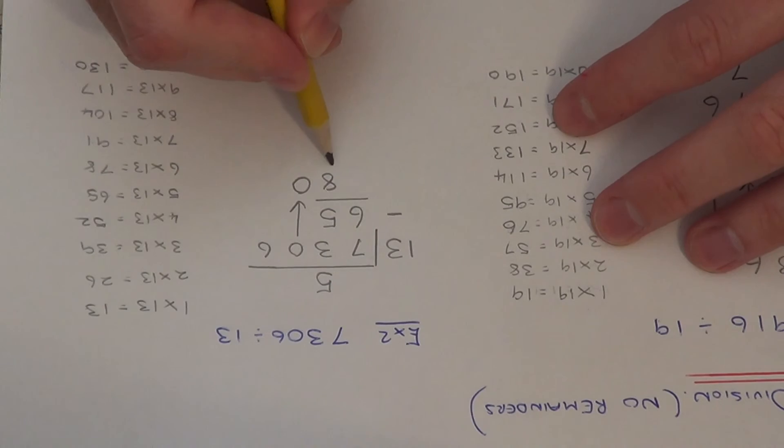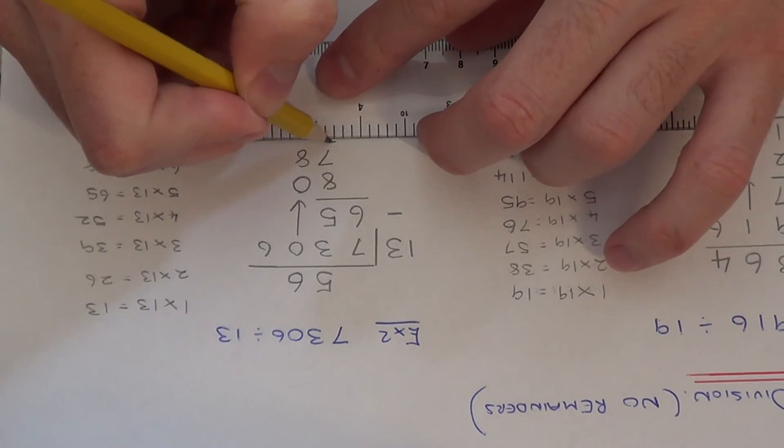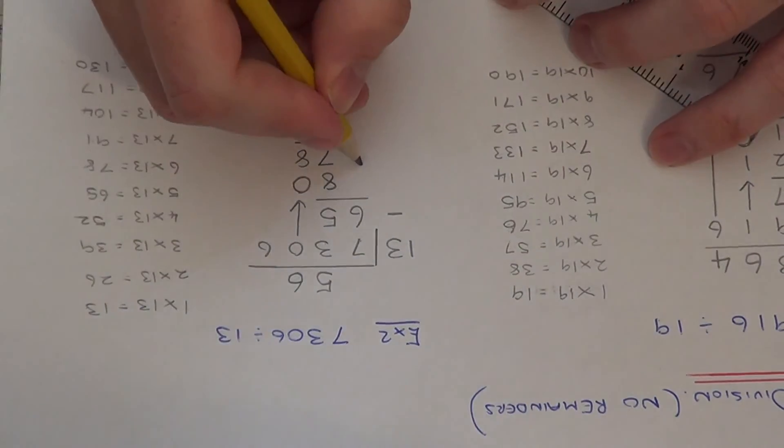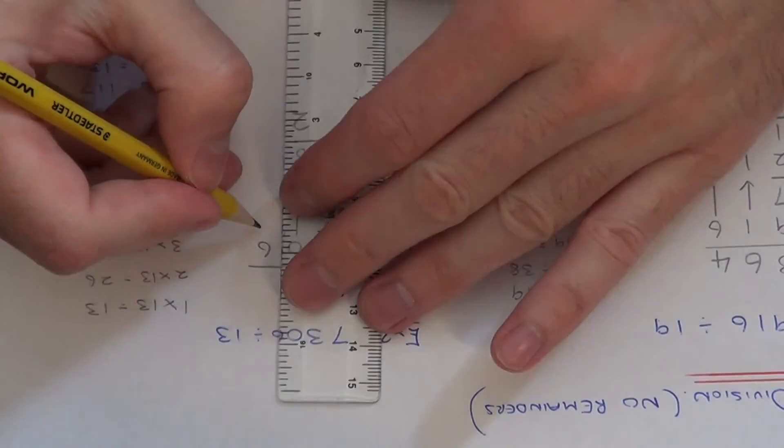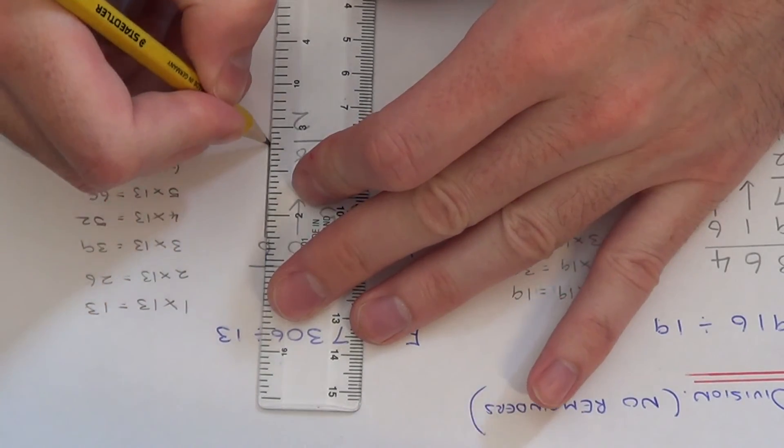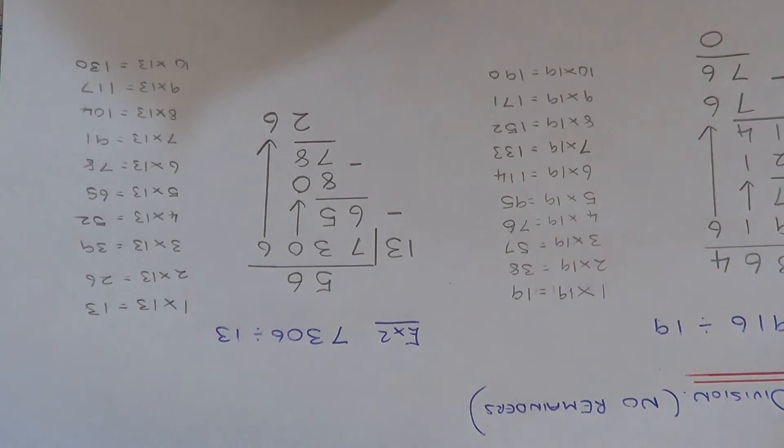So if we put 78 underneath, and that was 6 times 13, so we write the 6 at the top. So then we just need to take 78 from the 80. That gives us 2. So next bring the 6 down from the top again. So we've made 26.